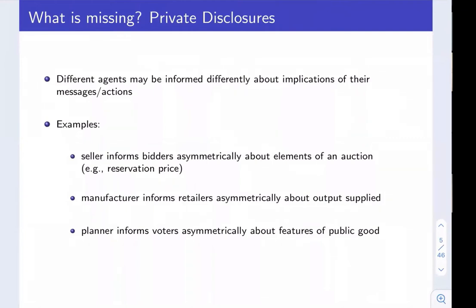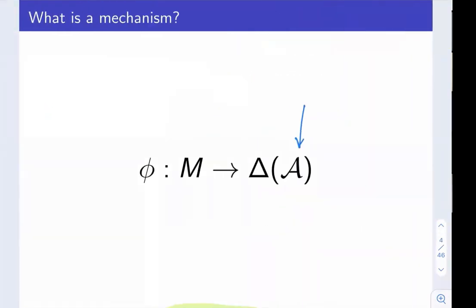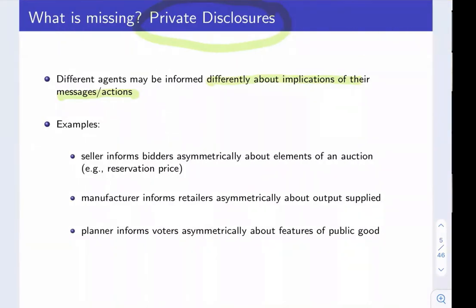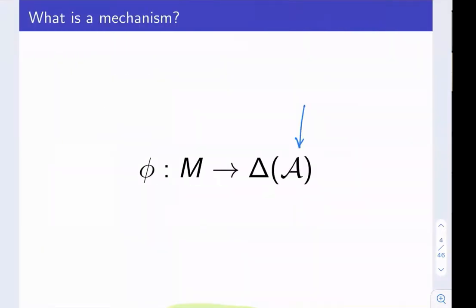Private disclosures are meant to capture the possibility that different agents may be intentionally informed asymmetrically about the implications of the messages or actions sent in the mechanism — and that cannot be done with the standard formalism. For example, we capture the possibility that a seller in an auction informs the buyers asymmetrically about elements of the auction, such as personalized reservation prices. Elaine may know what her reservation price is, she knows it's correlated with mine, but she doesn't perfectly observe mine. This has nothing to do with lack of commitment.